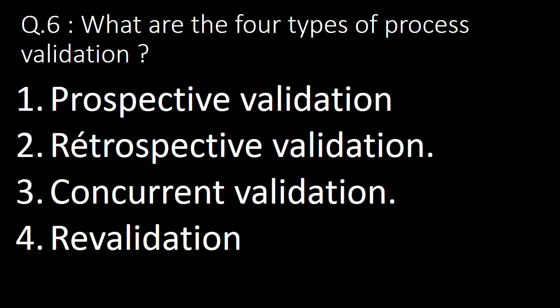Sixth question: what are the four types of process validation? The four types of process validation are: first, prospective validation; second, retrospective validation; third, concurrent validation; and fourth, revalidation.